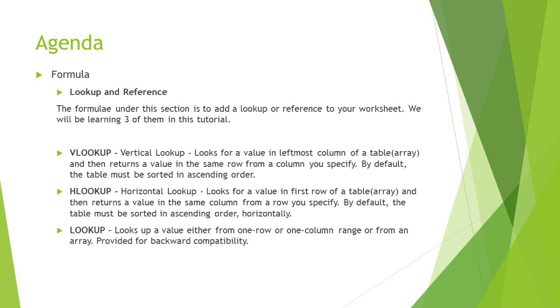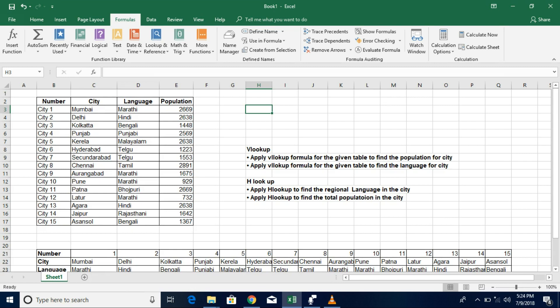There are some prerequisites when you try to extract information from a table. These variants deal with extracting desired information from a table or array based on a unique input called the lookup value. The lookup value corresponds to the very first column of the table. For example, in an inventory system or student database, you specify the lookup value for a particular entry and then extract information from a specific column.